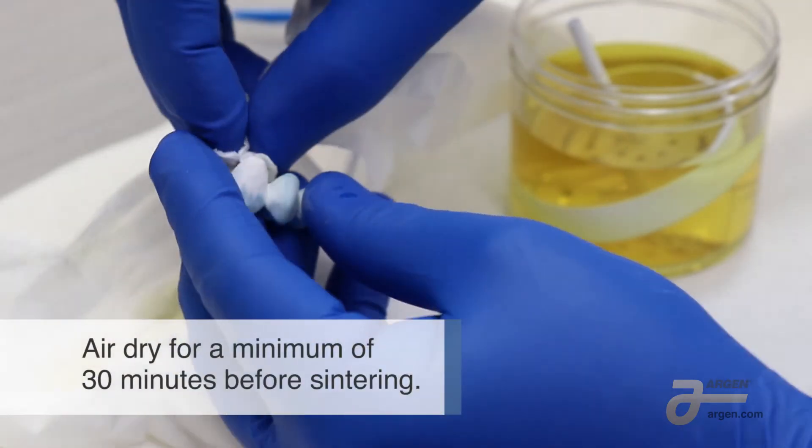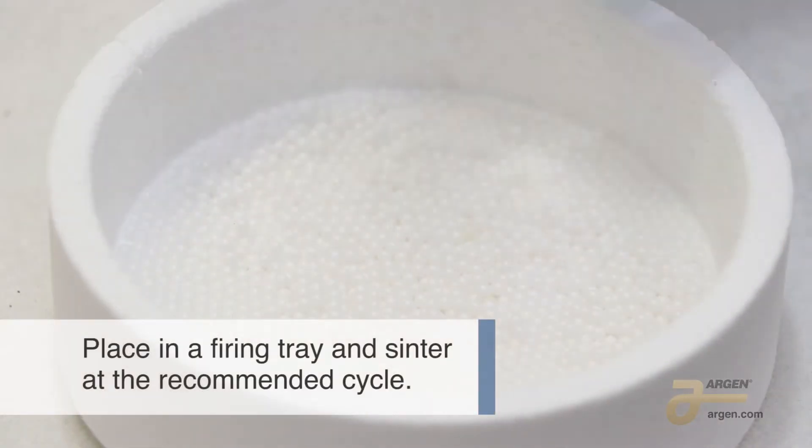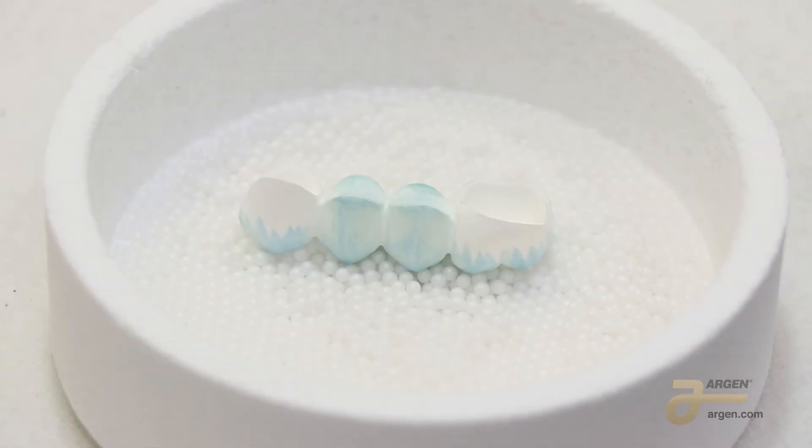Air dry for a minimum of 30 minutes before sintering. Place the units in a firing tray and process on a recommended sintering cycle.